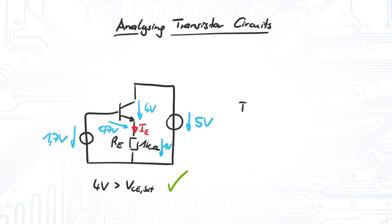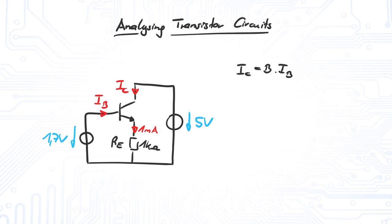We obtain the emitter current via Ohm's law. As we operate in the forward active region, we can use the current gain to relate collector and base current. Also, we know that the sum of collector and base current equals the emitter current. This leads to a relation between IB and IE.